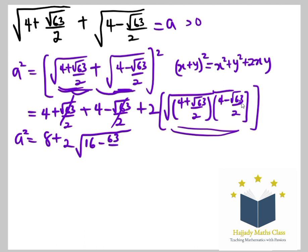So here I'm going to have A squared equals 8 plus 2 root 16 minus 63 over 4. Finding the LCM, which is going to be 4, so 64 over 4 minus 63 over 4. So here I have 1 over 4.